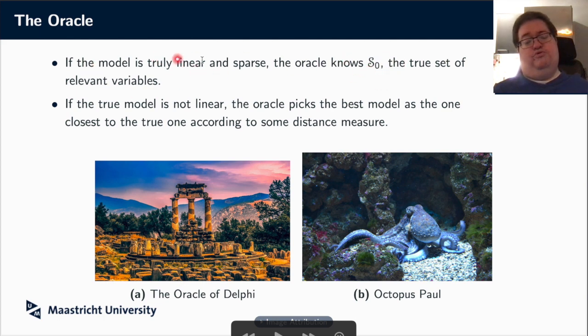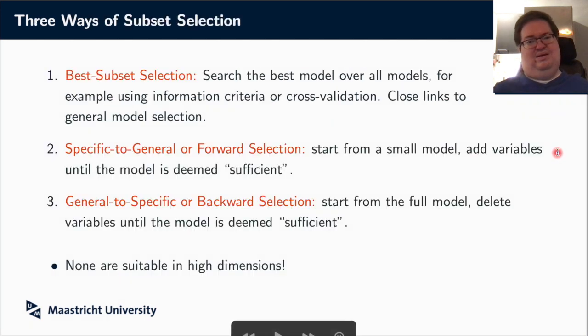Of course, once we've made this mapping by the oracle from the true non-linear world to a linear sparse world, we basically can assume again that we're in the linear framework and we have a true model. So I'm just going to work mostly with this setup where we have a truly sparse and linear model, where the oracle knows the true set of relevant variables. But keep in mind that we can see this actually as an approximation. But this is why we need this oracle.